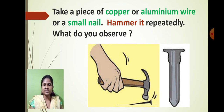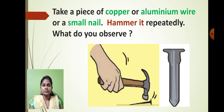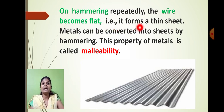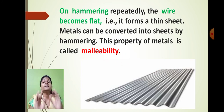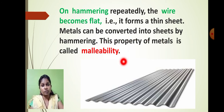Look at this image. Suppose if we take a piece of copper, an aluminium wire, or an iron nail and try to hammer it continuously — if we hammer the iron nail or aluminium wire continuously, what will you observe? Of course if we hammer something continuously, that metal will get flattened completely. The substance gets completely flat. On hammering repeatedly, the wire or the iron nail becomes flat and converts into a thin sheet-like structure. This property of metals — converting into fine sheets — is called malleability. Metals can be converted into sheets by continuous hammering. This property is called malleability.